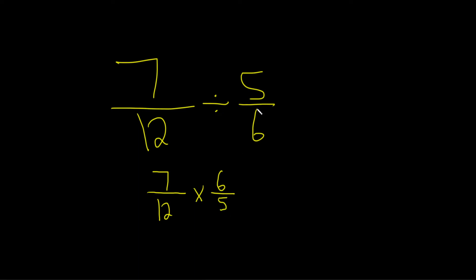That's the name it has — basically, you just flip it. Now that we've changed the division into multiplication, let's look and see if anything can cancel with our cross terms.